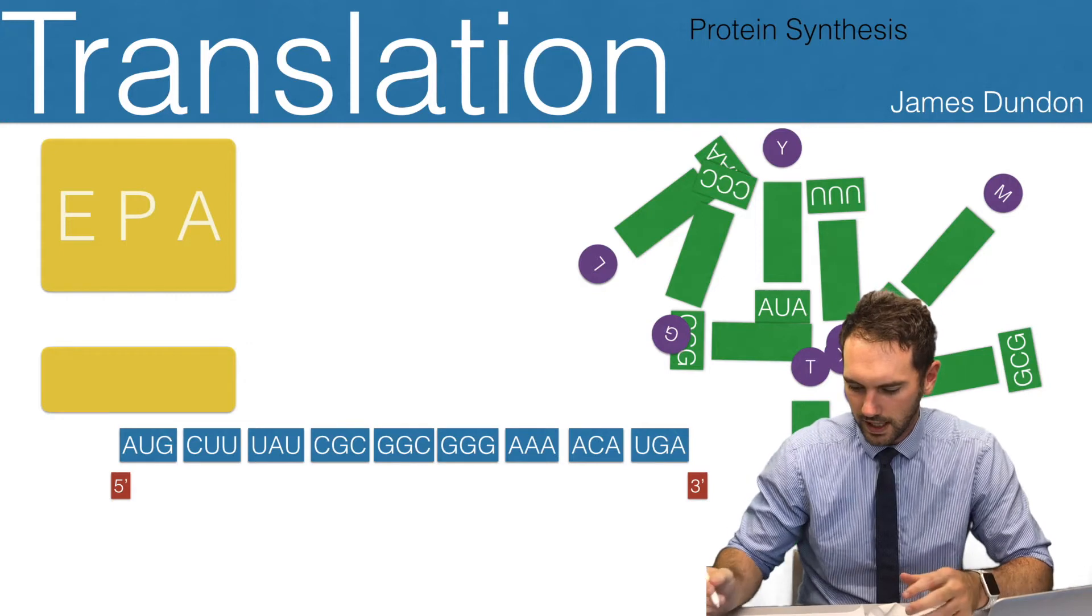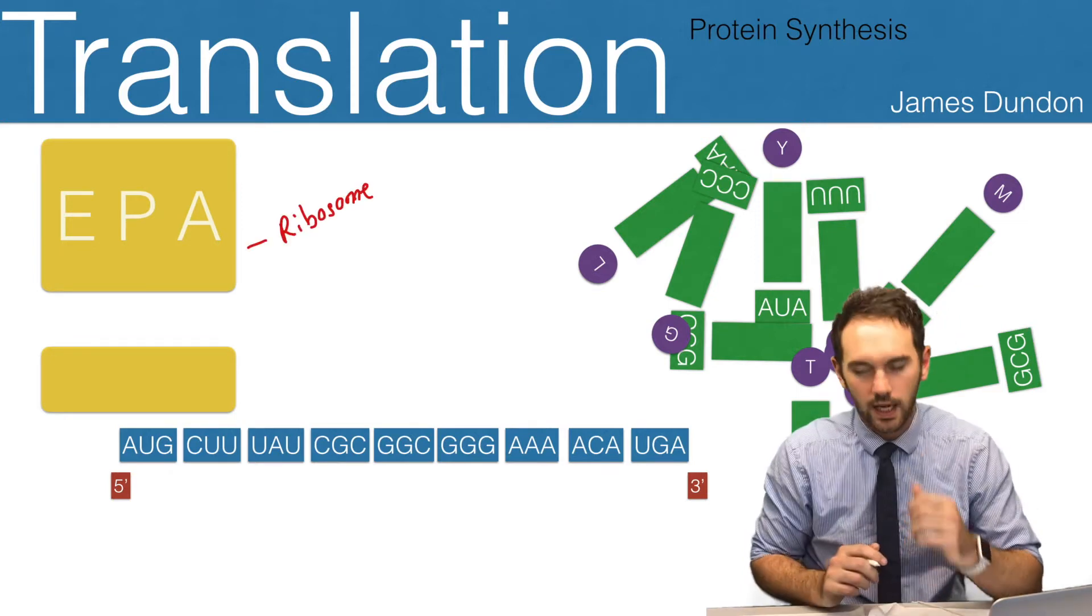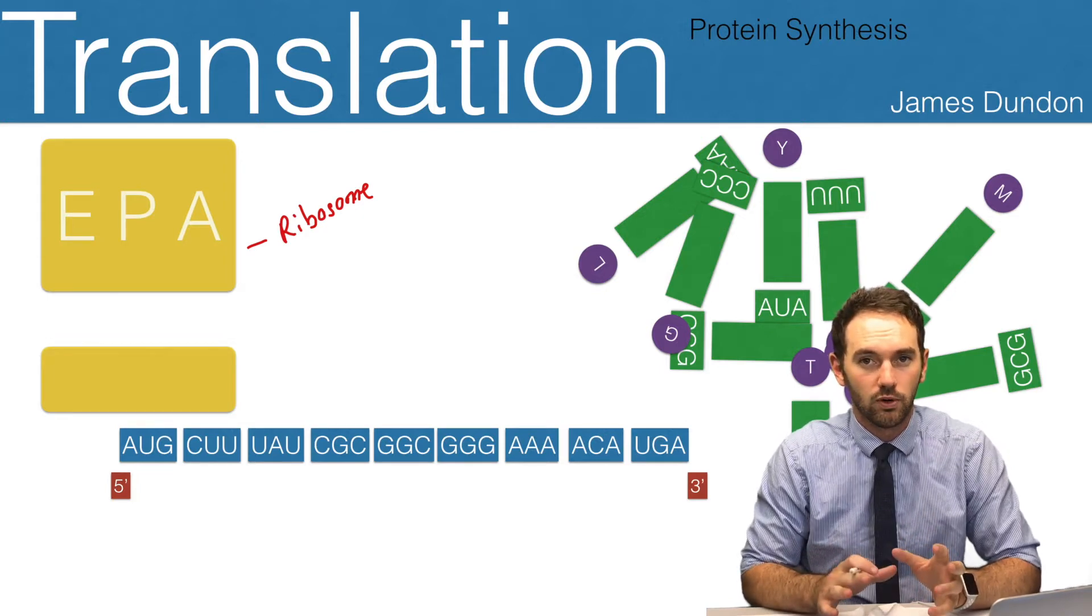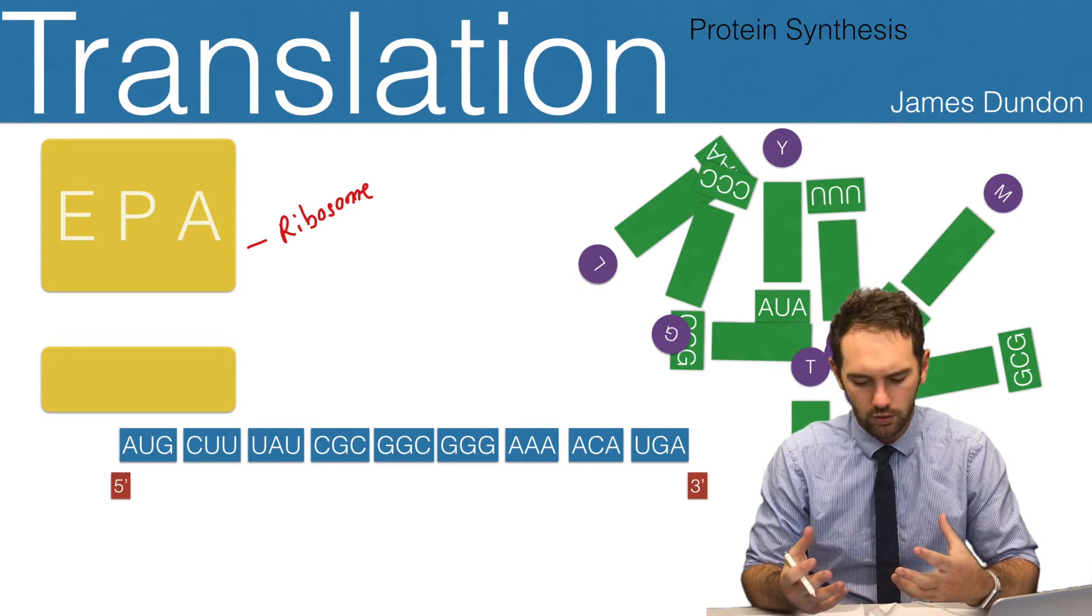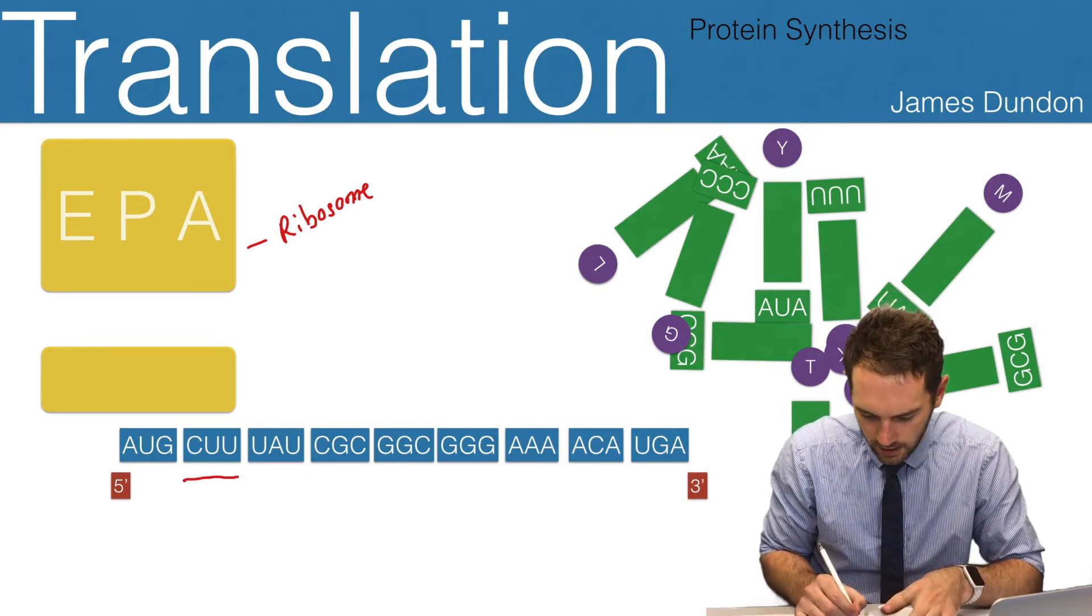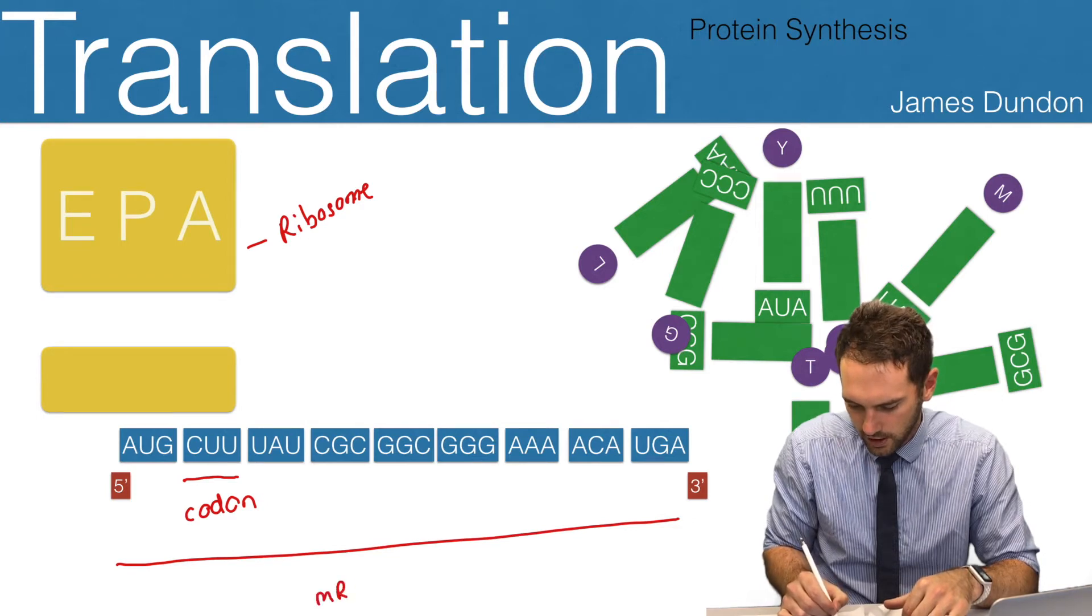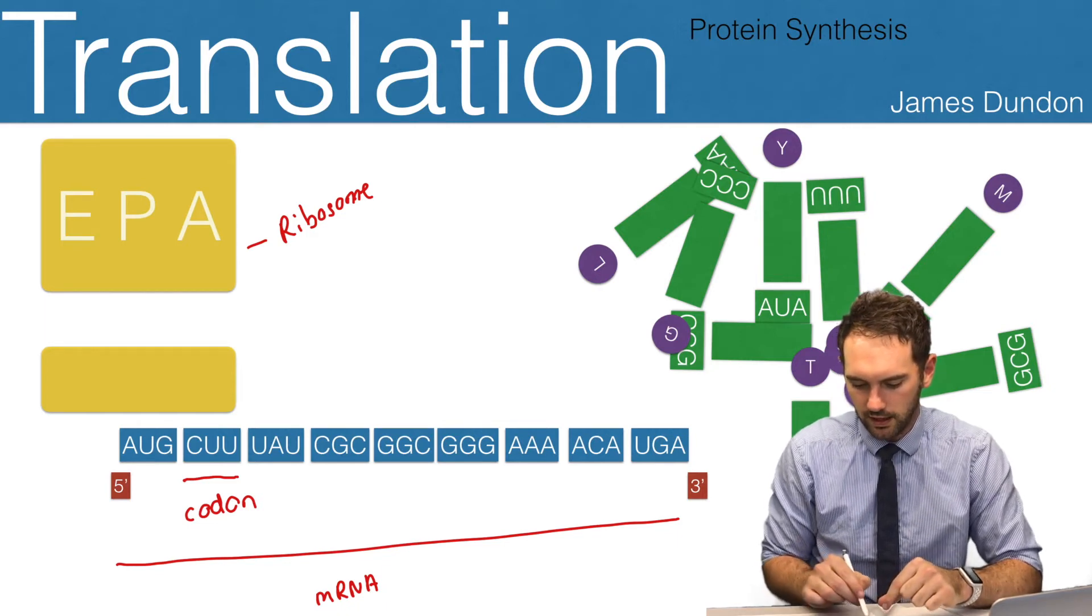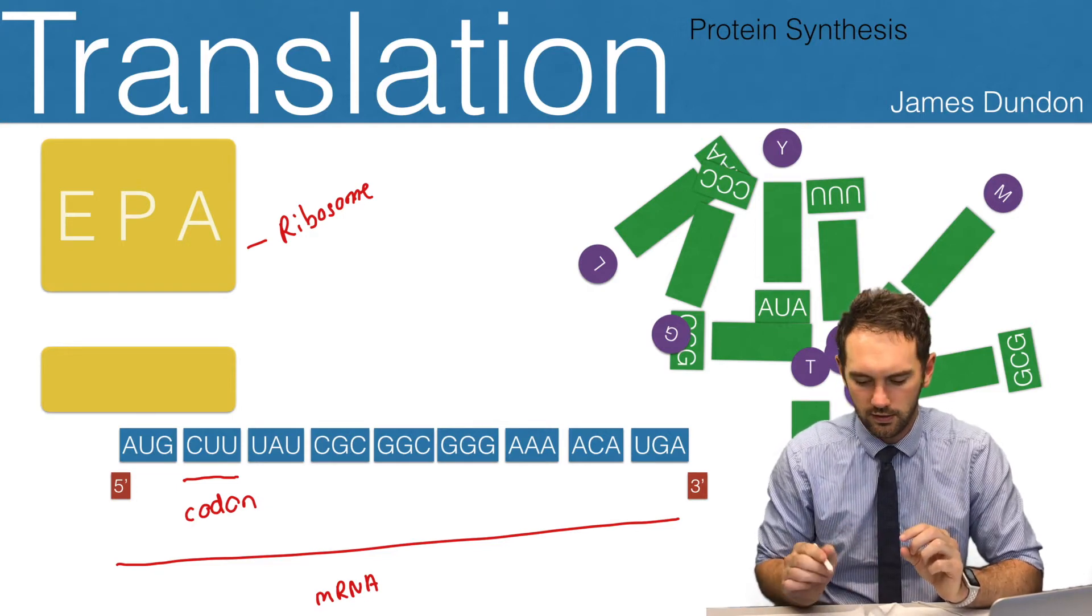First, let me label some of the parts. This yellow box is our ribosome, and its job is to move along the messenger RNA from 5' to 3', reading those nucleotides three bases at a time. Those three bases are called a codon. So this whole section here is our messenger RNA, separated into groups of three nucleotides, which is called a codon.